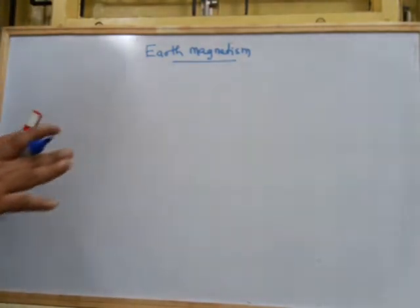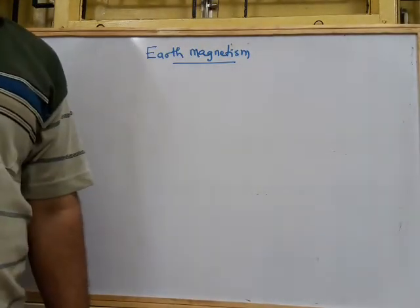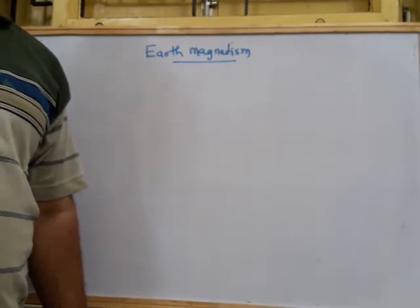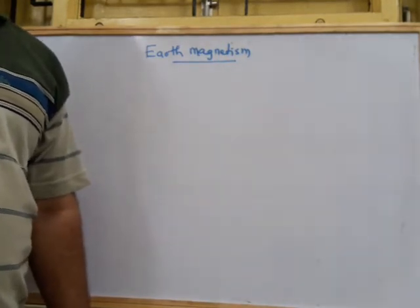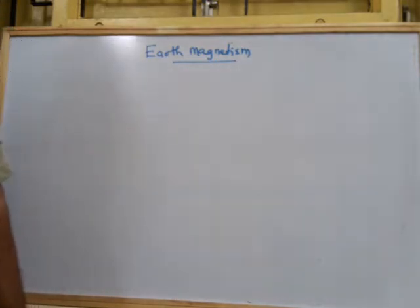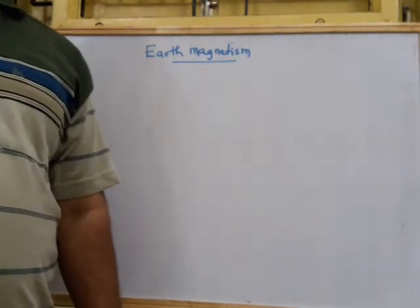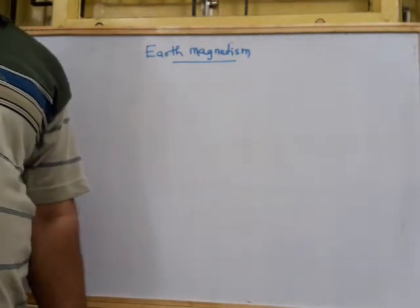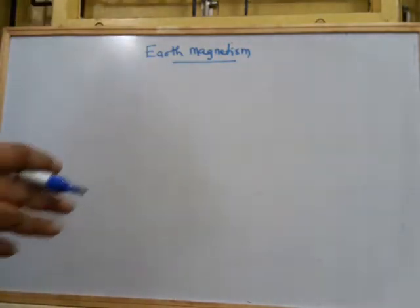The reason for this is that whenever you take a small magnetic compass — and what is a magnetic compass? It is a magnetic dipole only. It is a very tiny magnetic dipole.